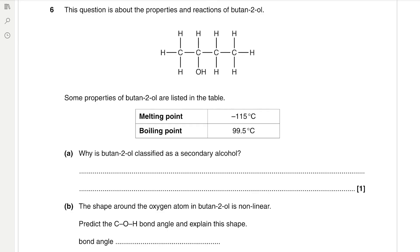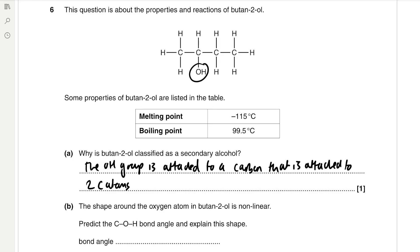Question 6 is about the properties and reactions of butan-2-ol. Butan-2-ol is classified as a secondary alcohol because the OH group is attached to a carbon that has two other carbon atoms attached to it.